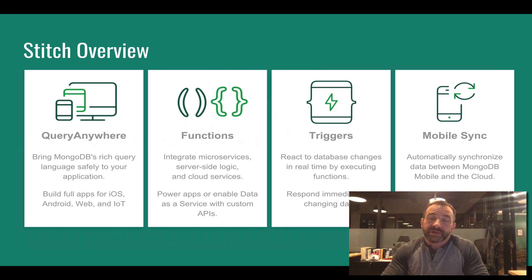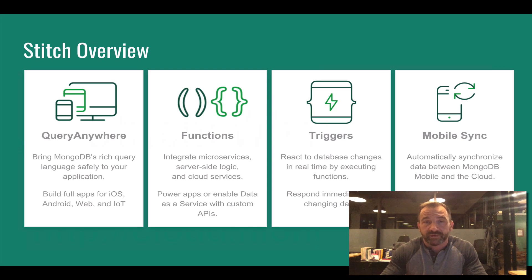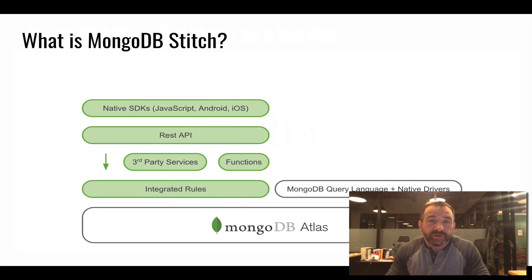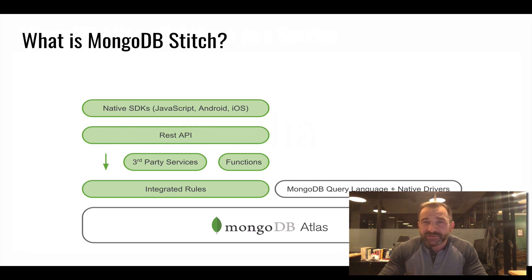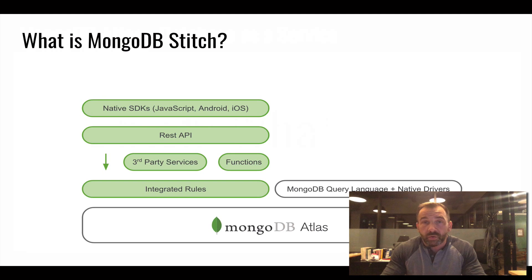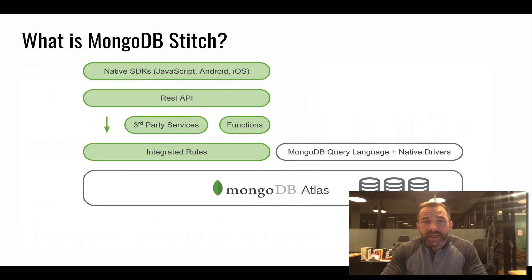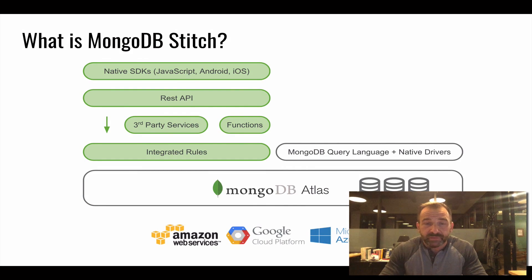We'll also have the ability to leverage mobile sync. This gives you the ability to have a mobile version of MongoDB running on your device and synchronize that with the cloud version. This is what MongoDB Stitch looks like from an architectural perspective. You leverage native SDKs — JavaScript, React, React Native, Android, iOS — running on your device. You access a RESTful API which gives you access to third-party services like Twilio. It gives you access to those functions you write, and integrated rules which provide granular control over access to documents within MongoDB. All of this lives within Atlas and rides on top of the three major cloud providers.